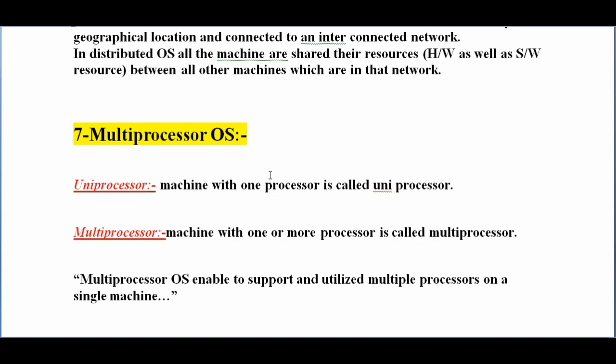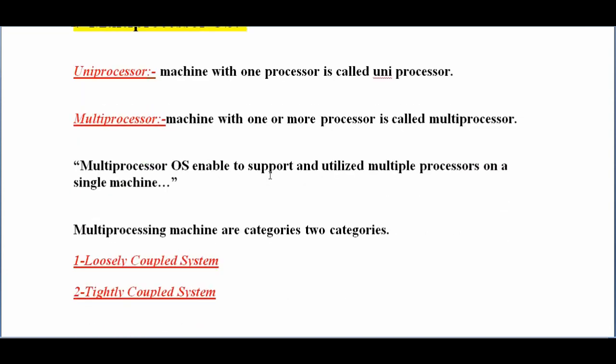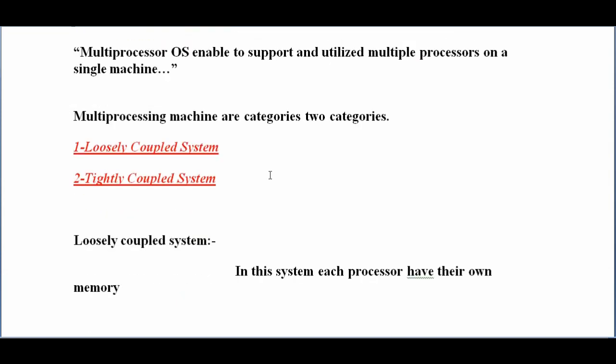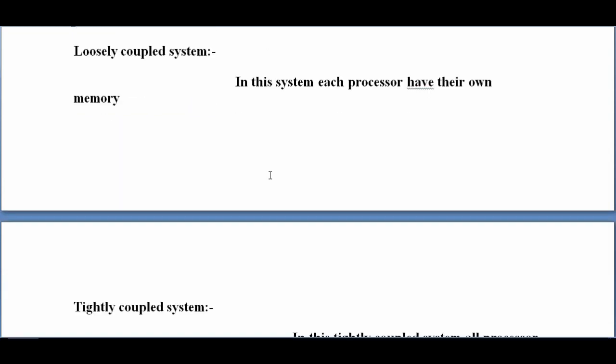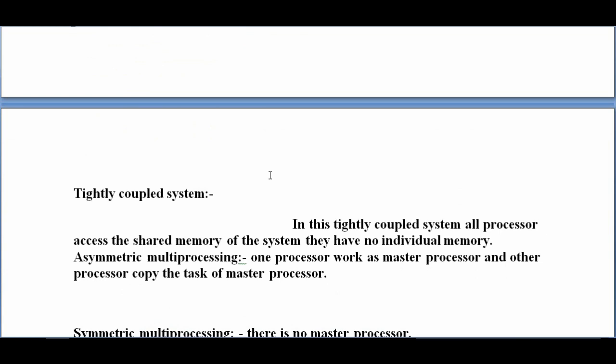Multiprocessor operating systems enable support and utilization of multiple processors on a single machine. Multiprocessing machines are categorized into two categories: loosely coupled system and tightly coupled system. In a loosely coupled system, each processor has its own memory. In a tightly coupled system, all processors access the shared memory of the system — they have no individual memory.